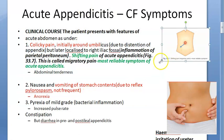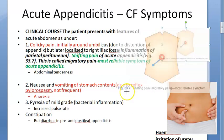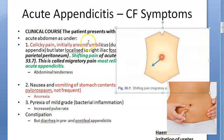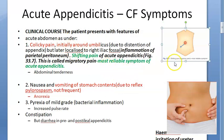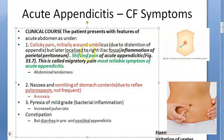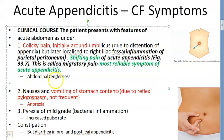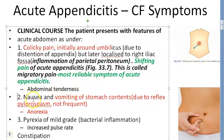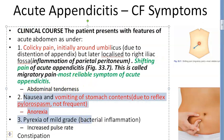Why does the pain start at the umbilicus? It is due to distention of the appendix — the appendix has become swollen and large. Later it gets localized to the right iliac fossa because of inflammation of the parietal peritoneum. So this person will also have abdominal tenderness. Now the second thing to focus on: nausea and vomiting.